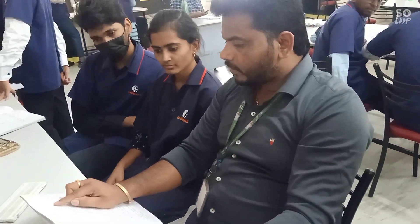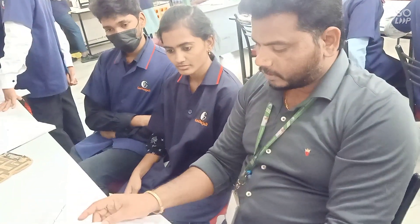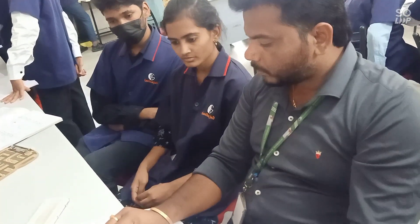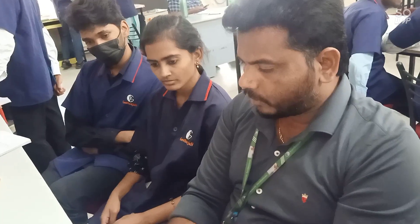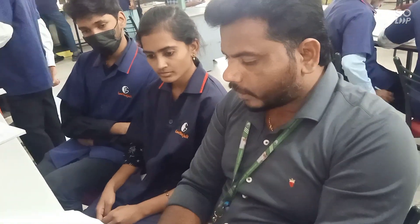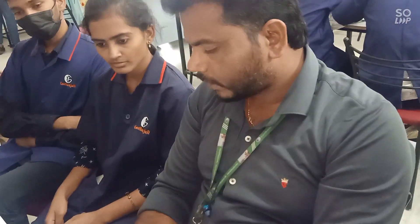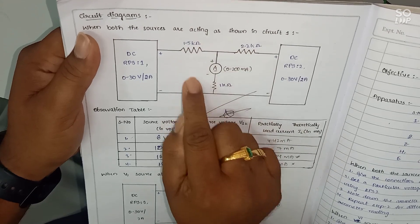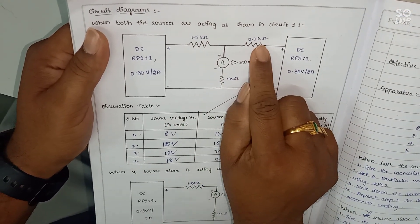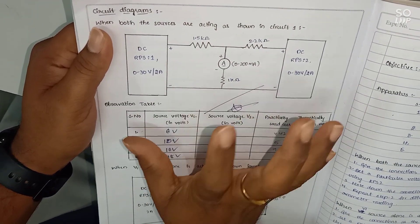Today, we are going to discuss about verification of superposition theorem. First, we know the statement of superposition theorem. Any linear active bilateral network consists of more than two independent sources. The response in any one of this branch is equal to the algebraic sum of responses due to individual source acting alone.